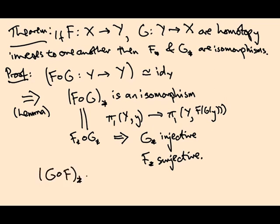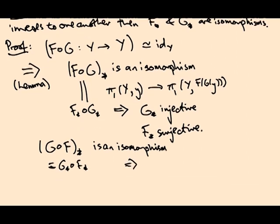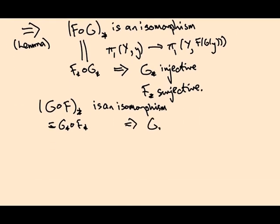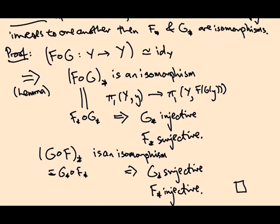Okay, and now by considering these guys the other way around, g∘f is also an isomorphism and it's equal to g_star∘f_star, and that implies that g_star is surjective and f_star is injective. So in particular both maps are surjective and injective so they're bijective. We've already seen they're homomorphisms, so they are isomorphisms which is what we wanted.